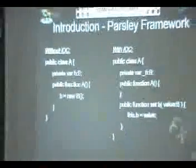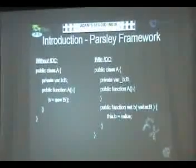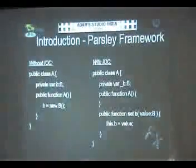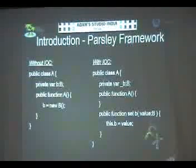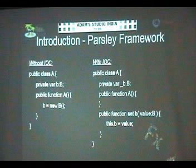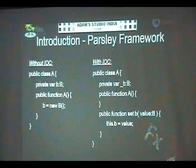As you can see in the first example on the left side of the screen, there is a class A with a variable B of type class B. As you want to use class B in class A — suppose class A is developed by you — in the constructor of class A, you are again constructing class B. Whatever changes happen in class B need to be reflected here, which means there is tight coupling between class A and class B.